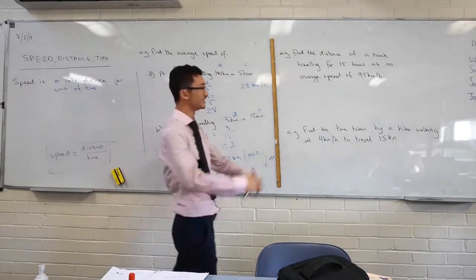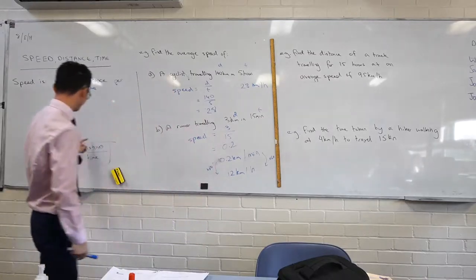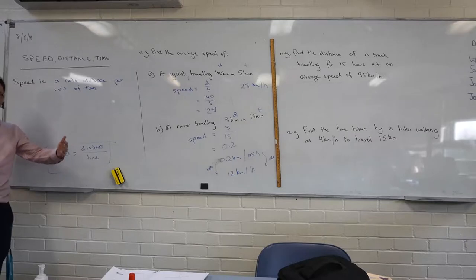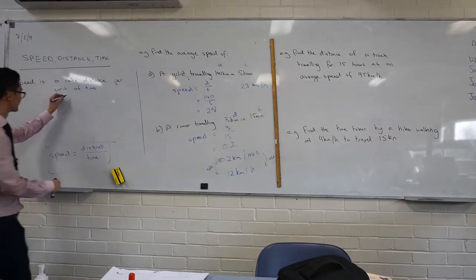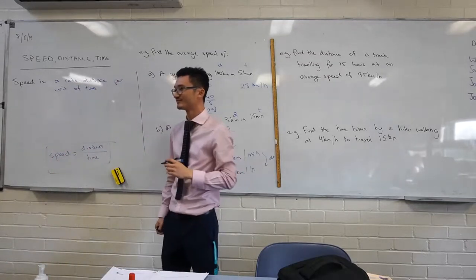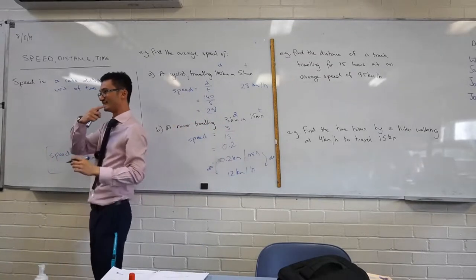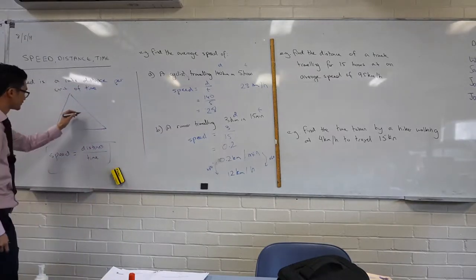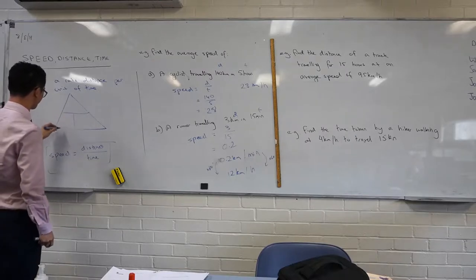But what are we trying to find here? We're trying to find distance. And this time, we don't want speed as our answer, we want distance. So how are we going to rearrange that? In order to solve for it, there's a really useful triangle. So here's our triangle that I'm going to draw, and I'll explain it.